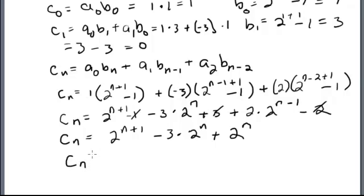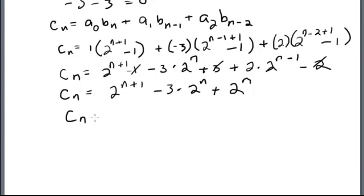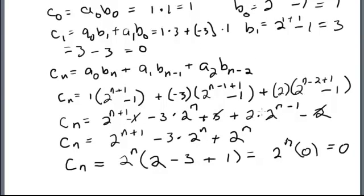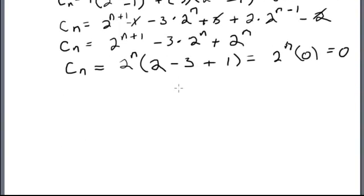So c sub n equals 2 to the n times (2 minus 3 plus 1), which equals 2 to the n times 0, which equals 0. So that's what we wanted to prove — the product has a non-zero constant term equal to 1 and everything else equal to 0, so c sub n is the multiplicative identity.